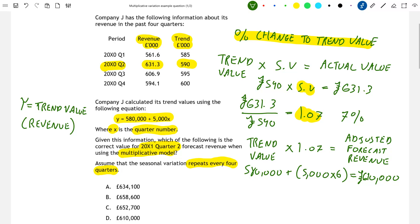So let's take our figure of 610,000 multiply it by 1.07, a 7% increase. That is our multiplicative seasonal variation. And this gives us 652,700 pounds. And this is our forecast revenue for 20x1 quarter 2 using the multiplicative model and assuming that the seasonal variation repeats every four quarters.